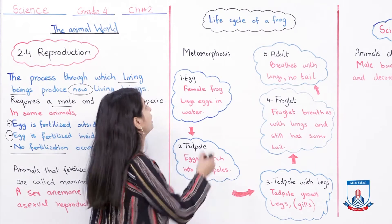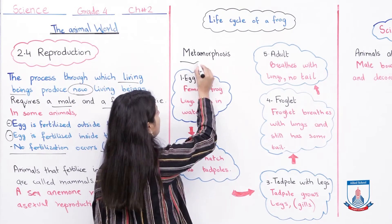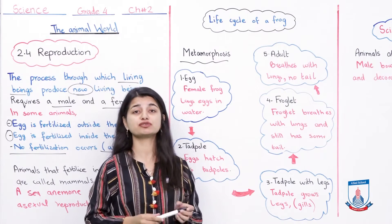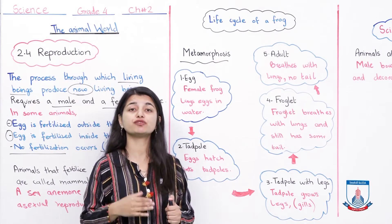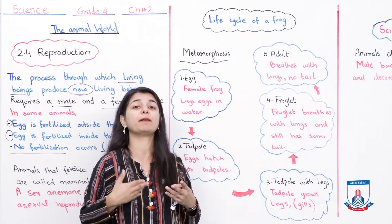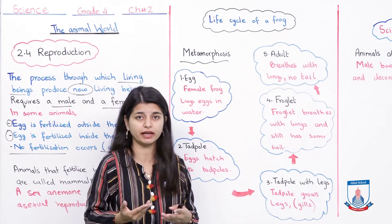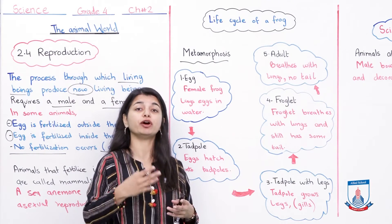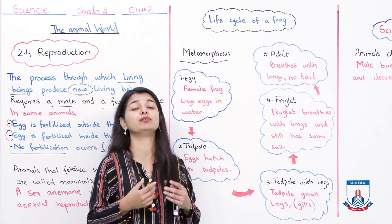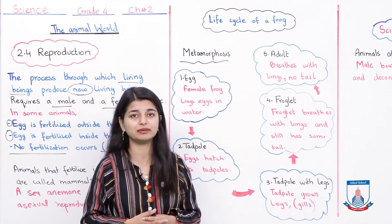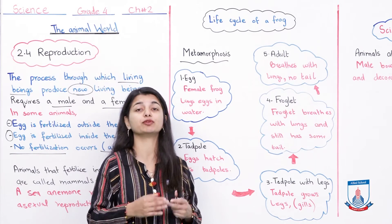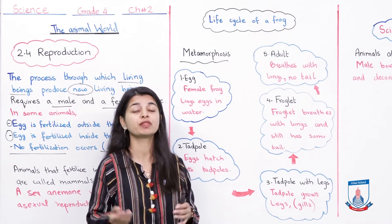Frogs have a life cycle we call metamorphosis. Metamorphosis is the term we use because a frog changes its physical body through its life stages. When a living organism changes its physical body as it grows, we call that process metamorphosis. Frogs carry out this process of changing their body form.